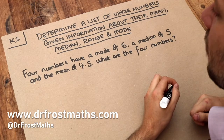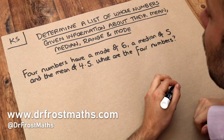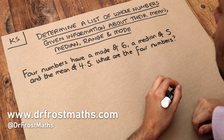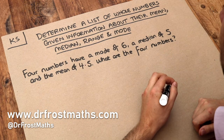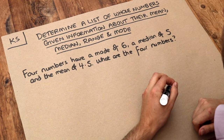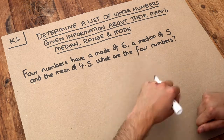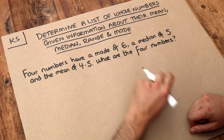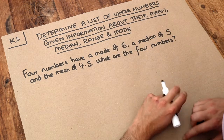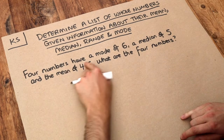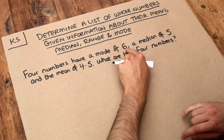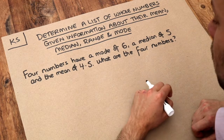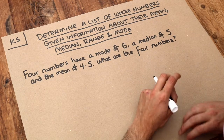Hello and welcome to this Dr. Frostmast's key skill video on determining a list of whole numbers given information about their mean, median, range and mode. These are effectively problem solving questions to do with different averages and range. So it says here: four numbers have a mode of six, a median of five, and a mean of 4.5. What are the four numbers?